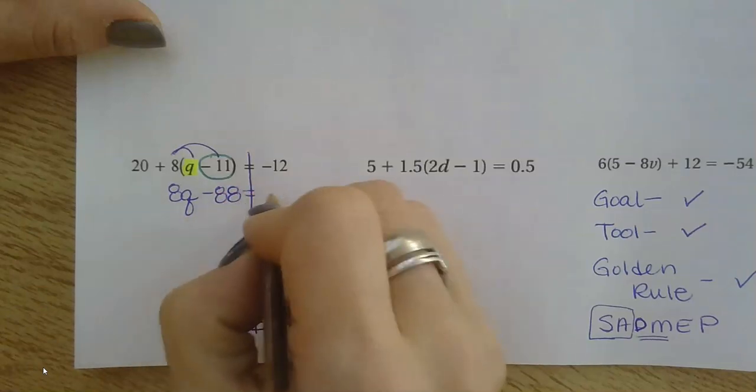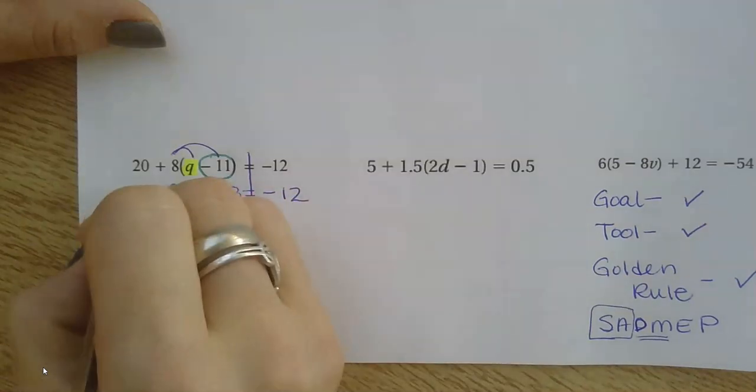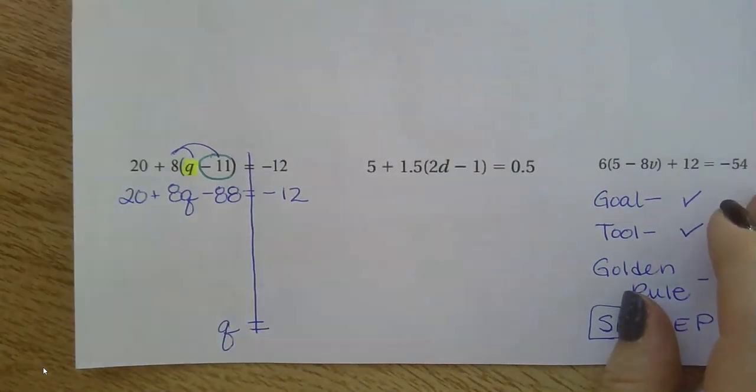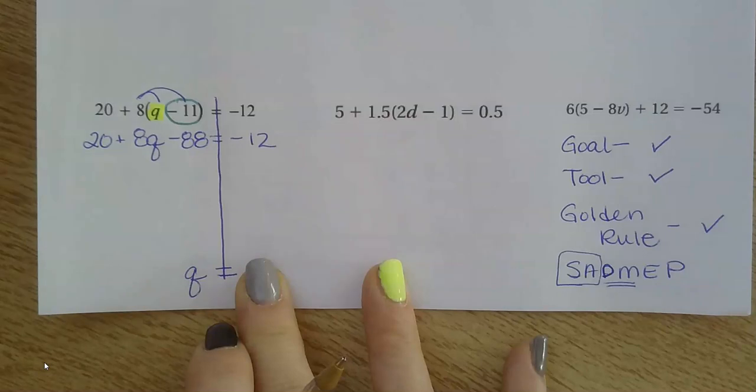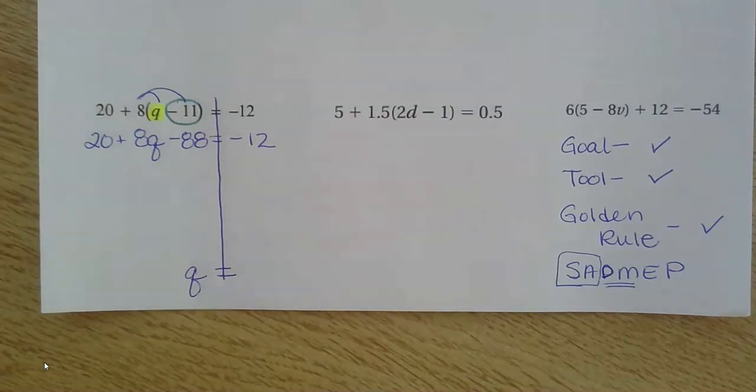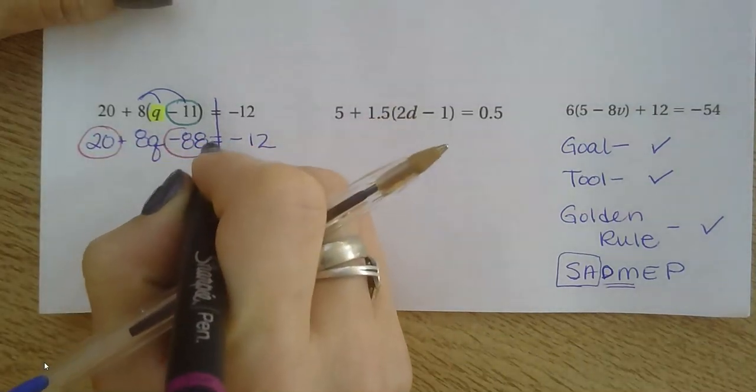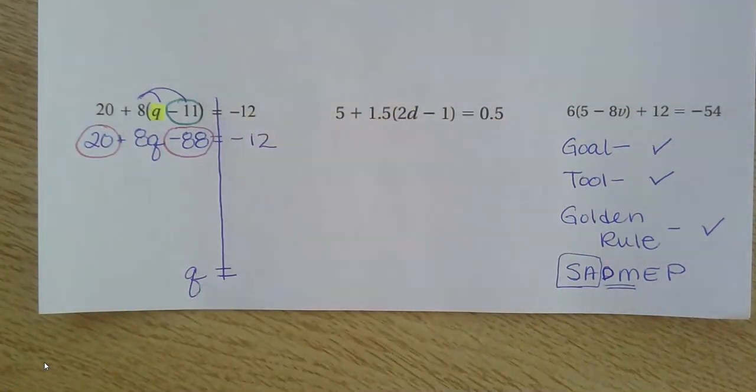So I've distributed, and now I copy down everything else. Remember, we only do one step at a time and carefully copy it down. You probably also noticed that we have some like terms we can combine. I have some constants that I can put together. Positive 20 and negative 88.